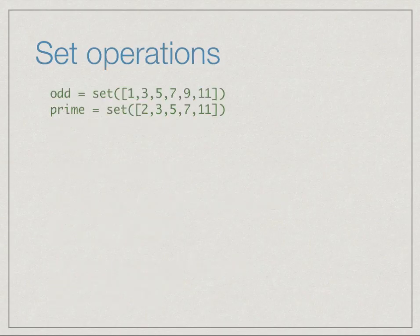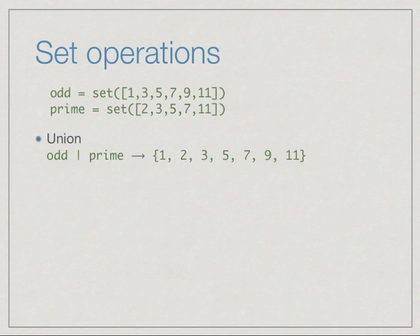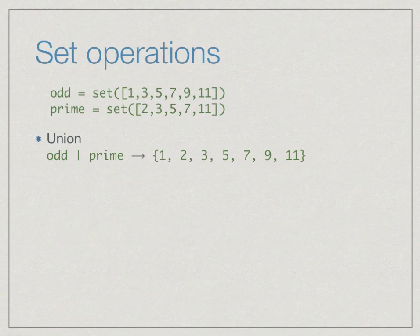Sets support basic operations like their counterpart in mathematics. Suppose we set up 'odd' as the set of all odd numbers between 1 and 11, and 'prime' as the set of all prime numbers between 2 and 11. Using the vertical bar we can get the union of the two sets — odd | prime gives those elements which are in either set: 1, 2, 3, 5, 7, 9, and 11, without any duplicates.